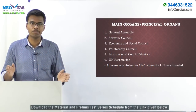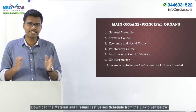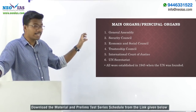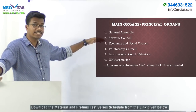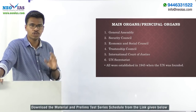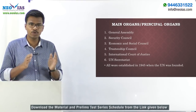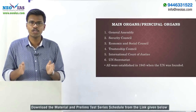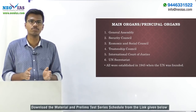In this session, we will be discussing the main organs or principal organs of the United Nations. The United Nations has six principal organs: General Assembly, Security Council, Economic and Social Council, Trusteeship Council, International Court of Justice, and the UN Secretariat. All six organs were established in 1945 when the UN was founded.